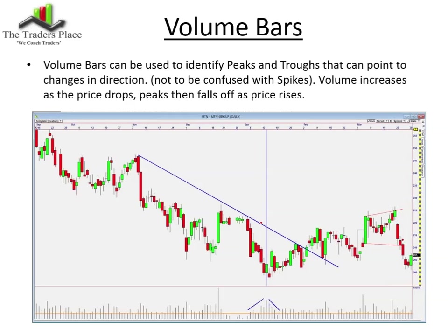On the volume, you can identify peaks and troughs, and this can point to changes in direction — it can give you a little heads up that things might be changing. Either we get an increase in volume while the price is falling, which indicates selling pressure, with a lot of volume going into the lower prices. We then get what's called a blow-off, where the volume peaks out. As the price starts to change direction, we can see the volume dropping off, forming a volume peak — not to be confused with spikes. That is very often a lead into a potential change in direction.